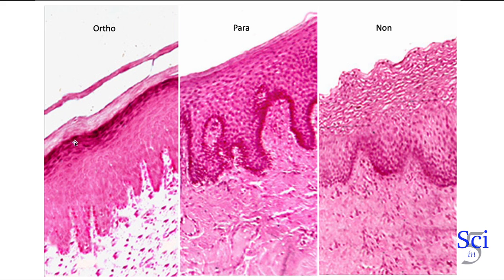The next layer is this darkish layer present in both the ortho and para — that is your stratum granulosum. Your stratum granulosum is very prominent in the ortho. This is where you're going to have the keratohyalin granules, and you can think of those granules as the glue that holds everything together.